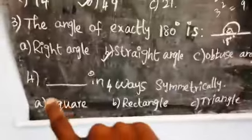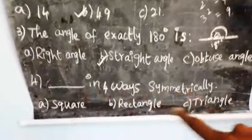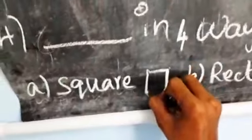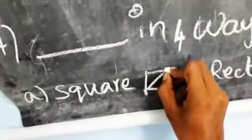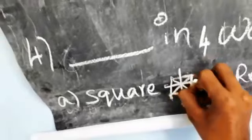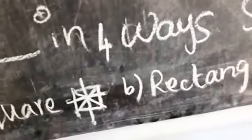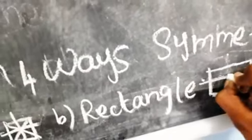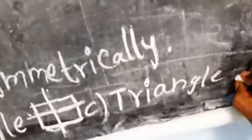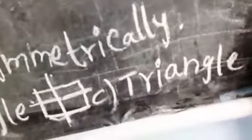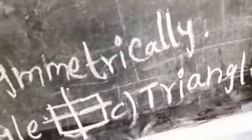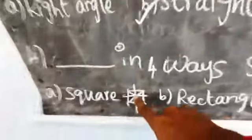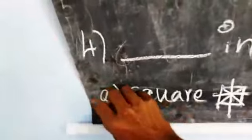The fourth question: which shape has four lines of symmetry? A square, rectangle, or triangle? A square has one, two, three, four lines of symmetry. A rectangle has only two ways - one and two. A triangle has only one line of symmetry. So the answer is square, which has four lines of symmetry.